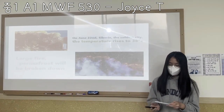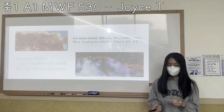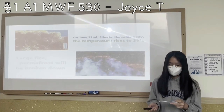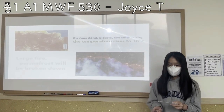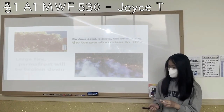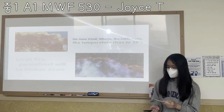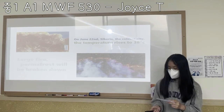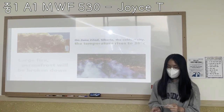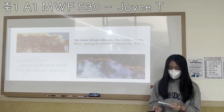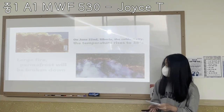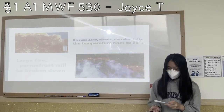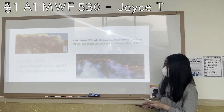Second, global warming causes unusual weather. For example, on June 22nd in Siberia, the temperature rose to 38 degrees Celsius. If hot weather continues, there will be more wildfires, and permafrost will break down.